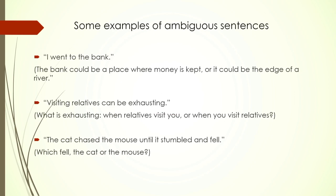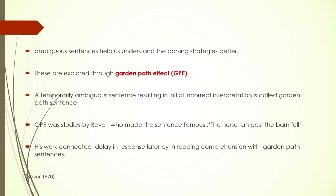Different types of ambiguity have been studied. Lexical ambiguity: 'I went to the bank' — the word 'bank' is ambiguous without context. Structural ambiguity: 'Visiting relatives can be exhausting' — are the relatives visiting you, or are you visiting them? Pronominal ambiguity: 'The cat chased the mouse until it stumbled and fell' — we are not sure who fell, the cat or the mouse. These represent different kinds of ambiguous sentences.